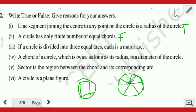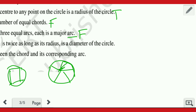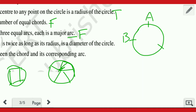Now the third question: if a circle is divided into three equal arcs, each is a minor arc. We consider whether arc AB is equal to arc BC is equal to arc AC.